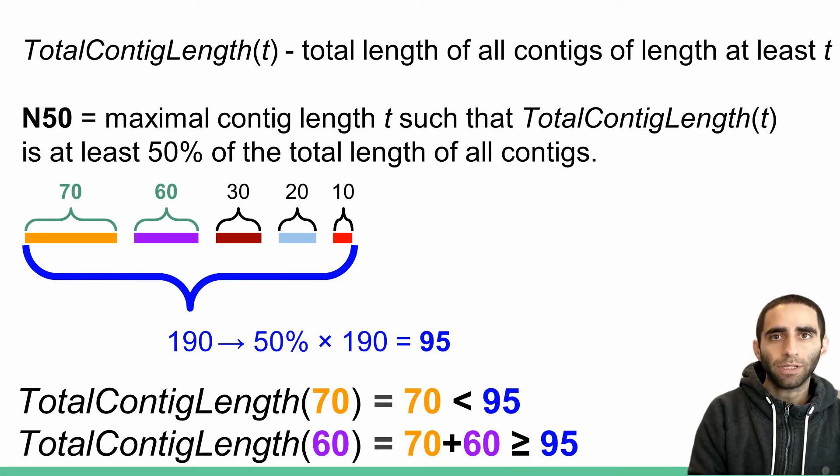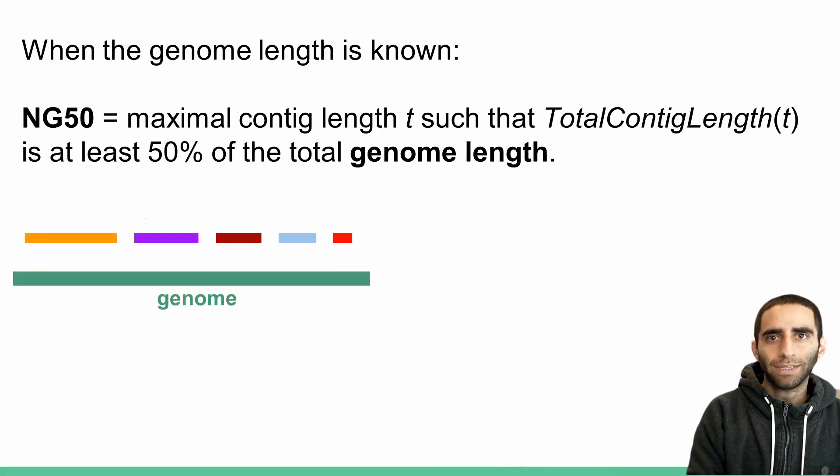When I computed N50, I defined the total length of my assembly to be the sum of the lengths of my contigs. What if, however, the true genome length was known? In this example, I've drawn the true genome as this green line.